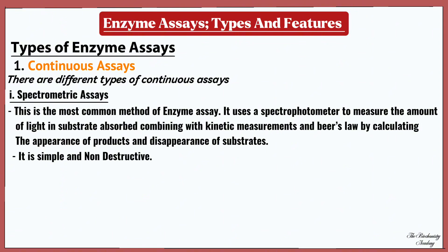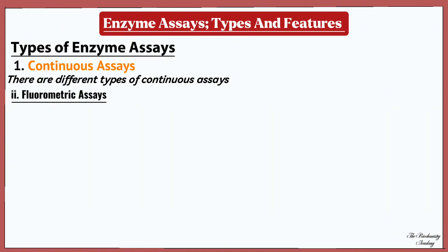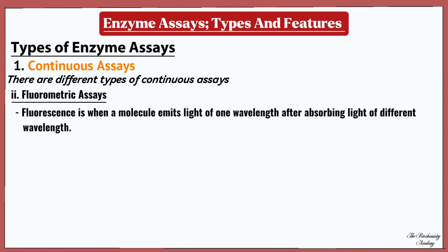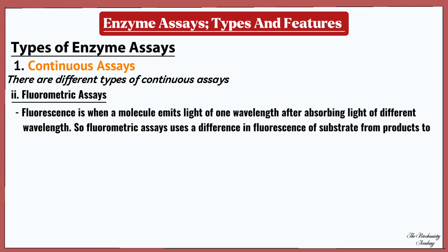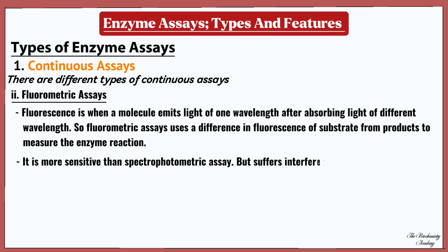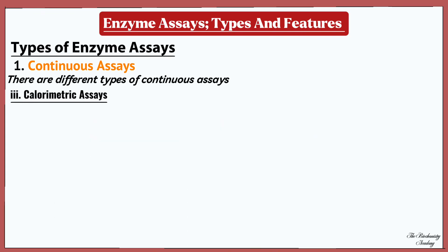The next type of continuous assay is the fluorometric assay. Fluorescence is when a molecule emits light of one wavelength after absorbing light of a different wavelength. Fluorometric assays use the difference in fluorescence of substrate from products to measure the enzyme reaction. This assay is more sensitive than the spectrophotometric assay, but can suffer from interference caused by impurities.